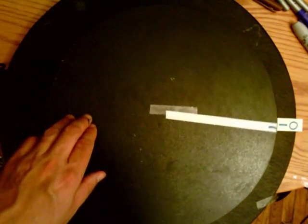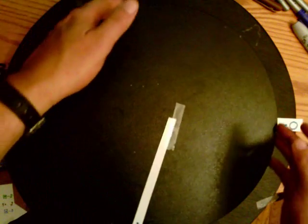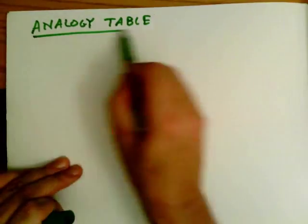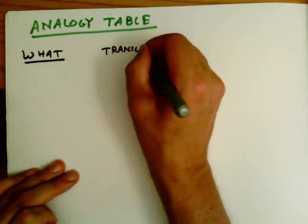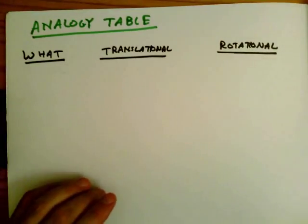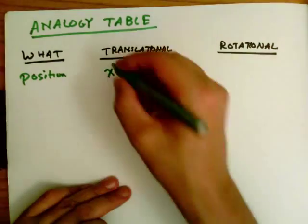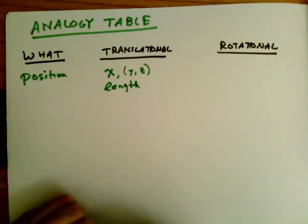To do this, I'm going to use my turntable again, but now instead of the badger, I'm going to use the whole turntable as the object whose rotational motion I'm going to consider. I'll use an analogy table — basically drawing an analogy between translational and rotational motion. Everything we're going to do is by analogy. Starting with position: translational position is usually indicated by X, Y, or Z and is a length along a number line.